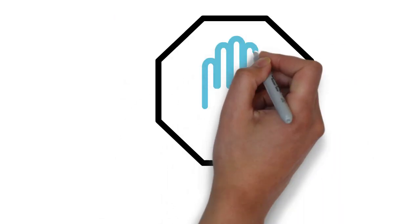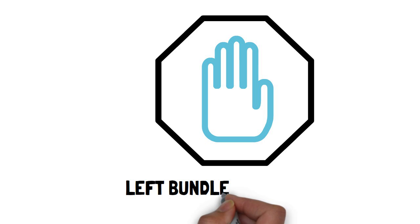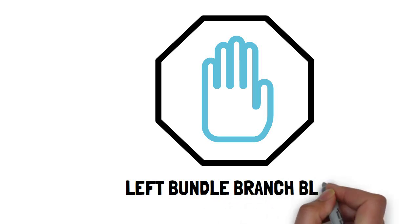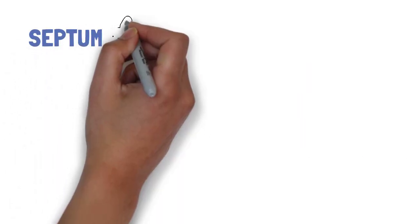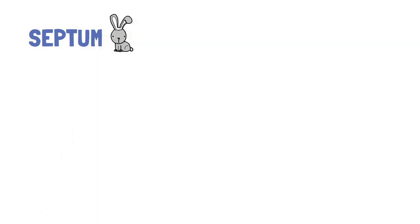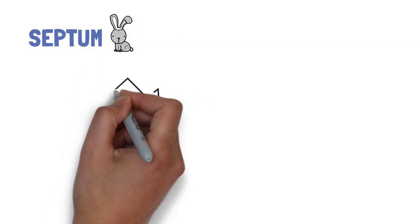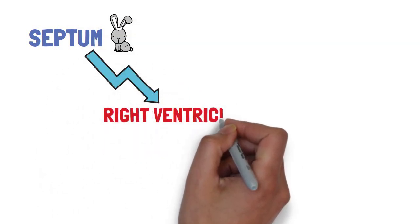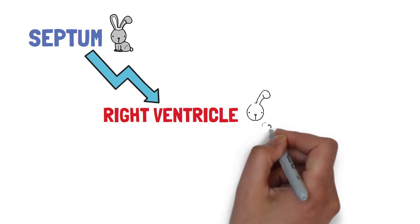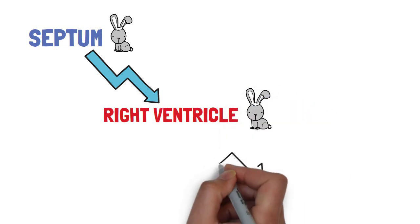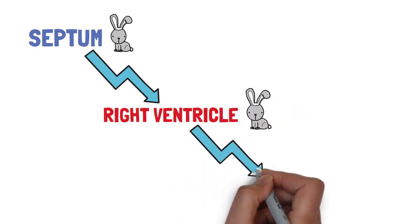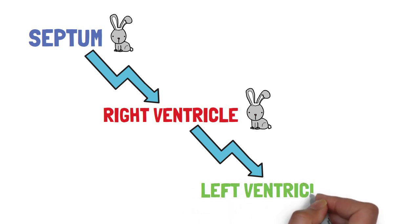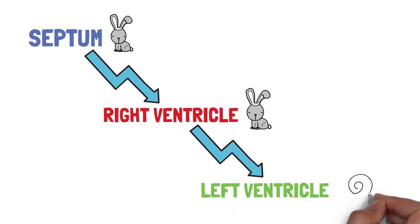Before we begin, we must have a clear picture of the changes seen in left bundle branch block. The premise of ECG changes is sequential rather than simultaneous depolarization of chambers of the heart, such that the fast depolarization of the septum and right ventricle through the conduction system is followed by slow myocyte-to-myocyte depolarization of the left ventricle.